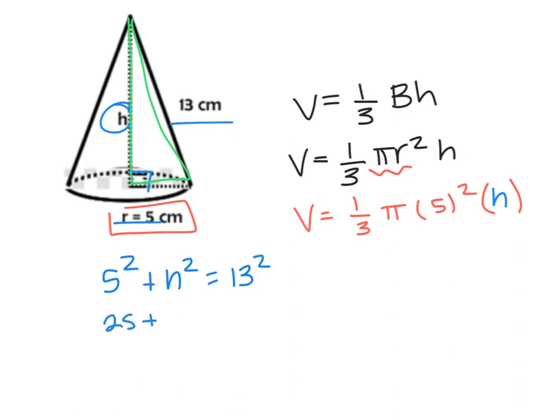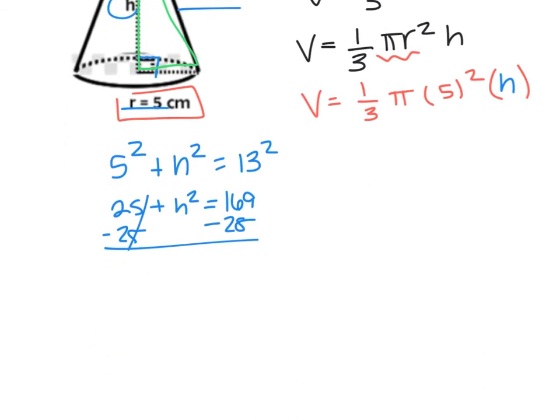I now take the square root of both sides, and I get h equals 12, because 12 times 12 is 144. I can now use this 12 in my formula. So I'm going to erase h and substitute 12.